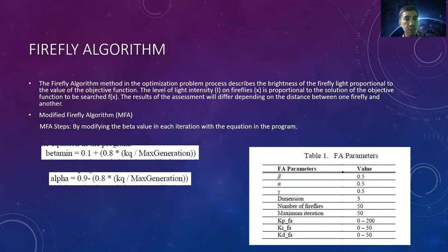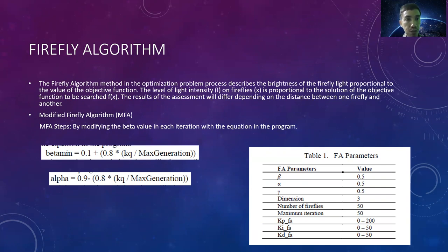The next method we use in this research is the Firefly Algorithm. The Firefly Algorithm is one of the smart intelligent methods. The optimization problem process describes the brightness of the Firefly light proportional to the value of the objective function. The conventional Firefly Algorithm was modified by modifying the beta value in each iteration with the equation shown in this program. In Table 1, you can see the Firefly Algorithm parameters.